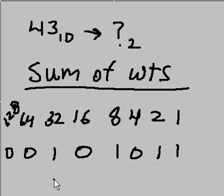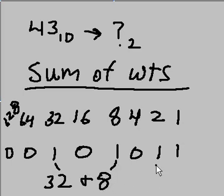So, if I sum up these weights, I get 32 plus 8 plus 2 plus 1. And that gives me 32 and 8 is 40, plus 2 is 42, plus 1 is 43.